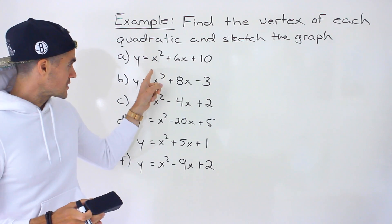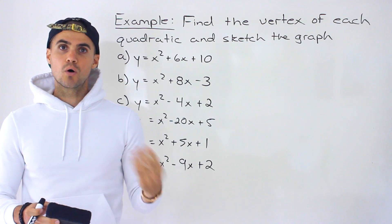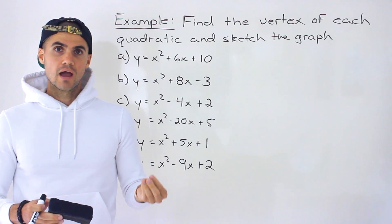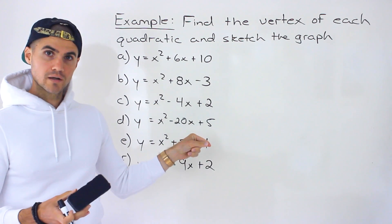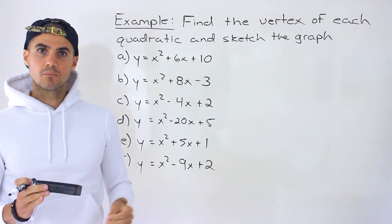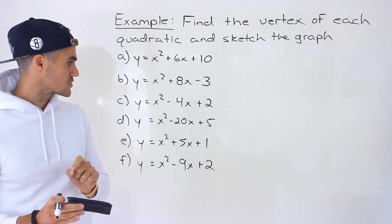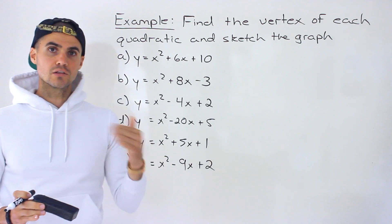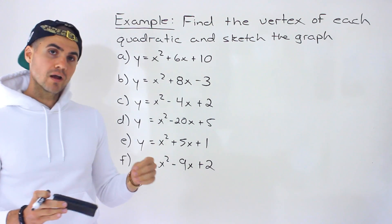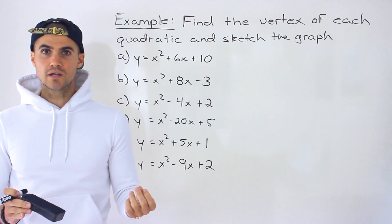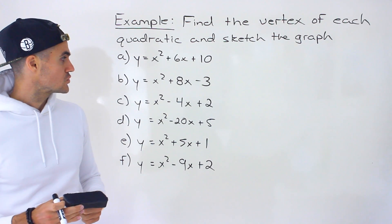Notice that all of these quadratics have an a value of one. In the completing the square overview video I mentioned there are two cases: an a value of one, or an a value that's not one. When it's not one, the process is more complex with a few more steps. When the a value is one there are fewer steps, so in this video we'll focus on a equal to one, and in the next video we'll do the case where a is not one.